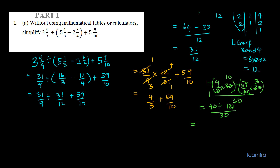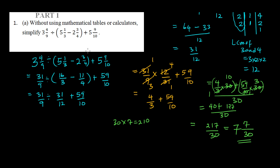We have 217 over 30 as an improper fraction. Let's convert it to a mixed number. 30 goes into 217 seven times because 30 × 7 = 210, with a remainder of 7. So the final answer is 7 and 7/30. We've successfully simplified what WAEC asked us to simplify.